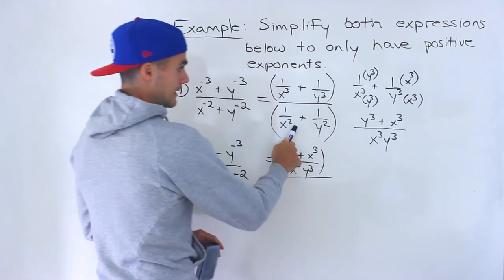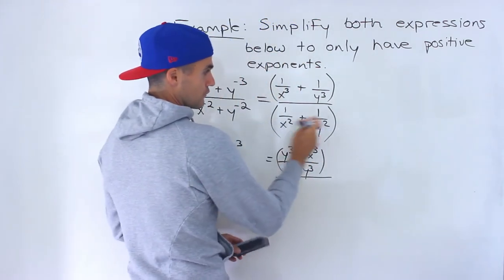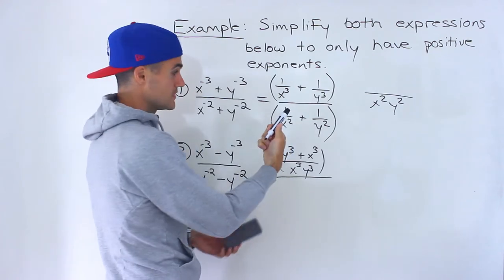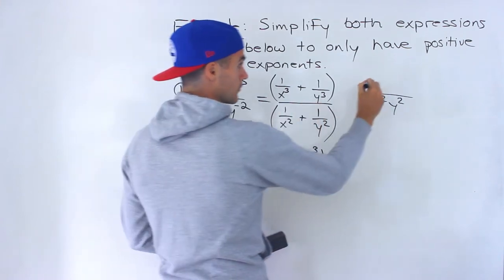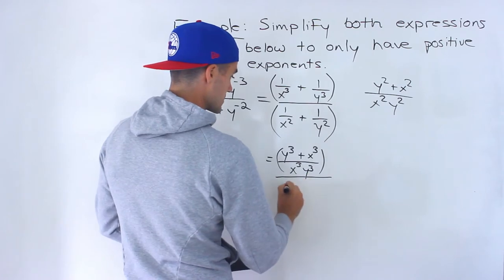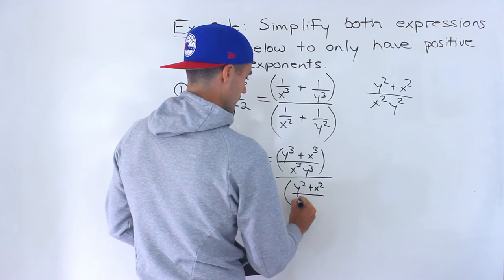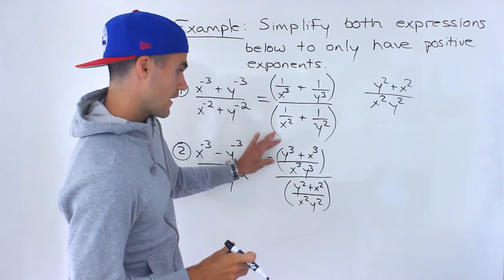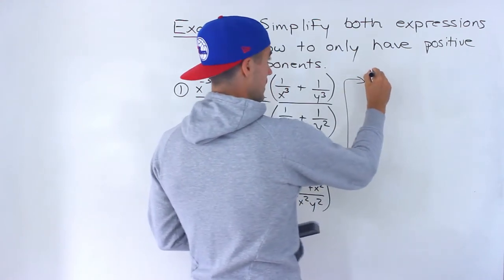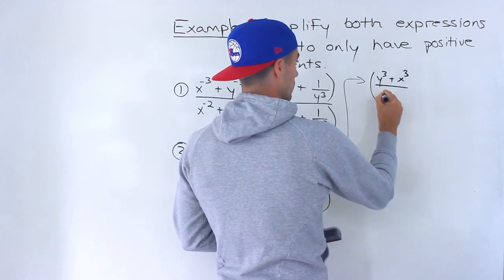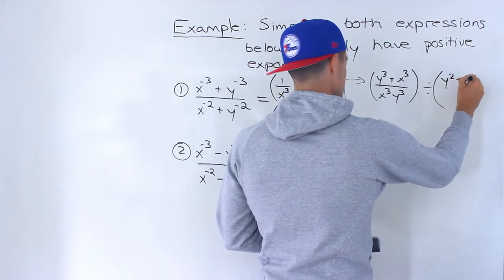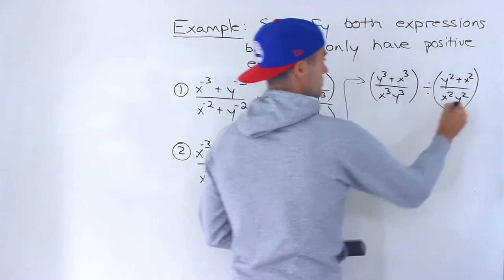Now for the denominator portion — same thing. The two factors are different, so the common denominator is going to be x squared y squared. This term we multiply by y squared, both numerator and denominator; this term we multiply by x squared, so we multiply the numerator by x squared as well. We end up with y squared plus x squared over x squared y squared. So now we have one fraction divided by another.